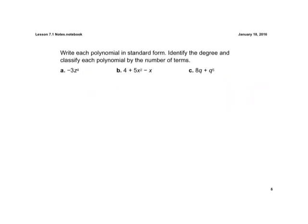A couple more examples. Write them in standard form. Let's look at A — there's only one term, so that's what we call a monomial, so we can't really rewrite it. The degree is the highest exponent — we see the degree is 4.